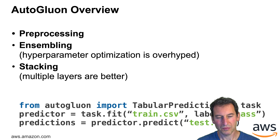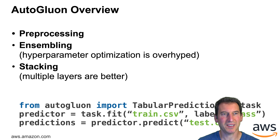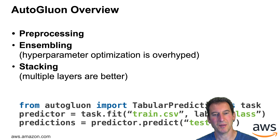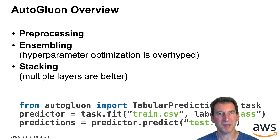The key ingredients are: you pre-process the data, you assemble models, you can optimize hyperparameters — though that's a little bit overhyped — and then at the end, you stack things together.